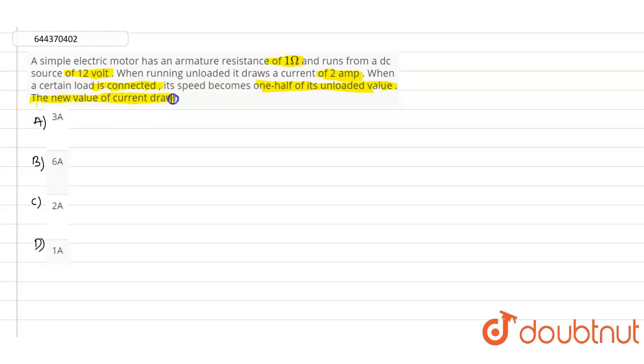Here we need to find out the new value of current drawn. The armature resistance Ra is 1 ohm and DC voltage Vdc is 12 volts. Current I equals 2 amps. When load is applied to the motor, its speed becomes one half of its unloaded value. According to that, we know that back EMF value...